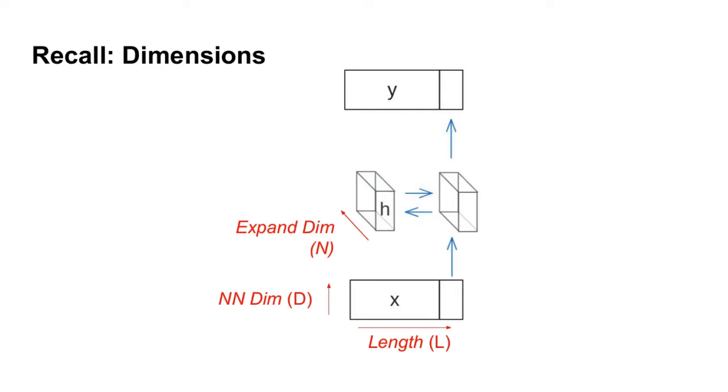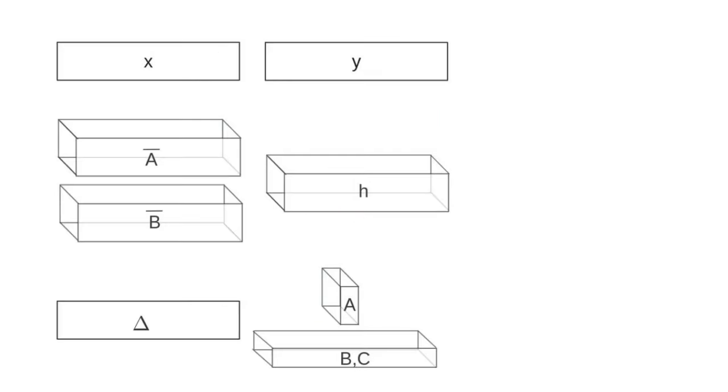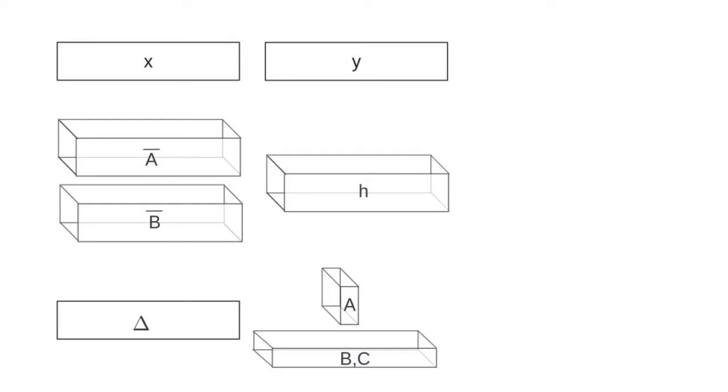First, let's recall some of the notation and dimensionality. Our input and output x and y have dimensionality length by channels d. And our hidden state will expand that through this additional expanded dim n. The players in the linear time-varying system, specifically within the Mamba computation, are as follows. First, we have the input and output vectors x and y, which have dimensionality length by intrinsic dimension or channels d.